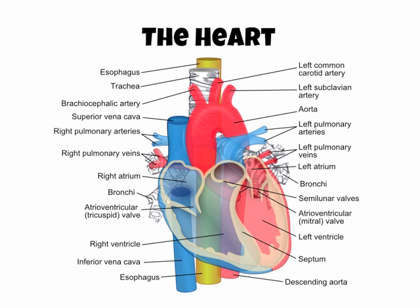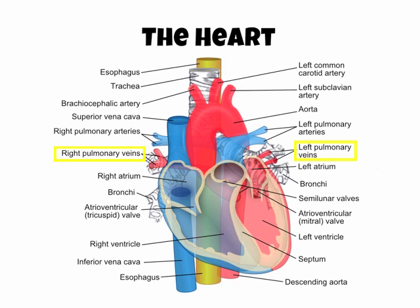Other important areas to note are the pulmonary arteries — the blue bit attached to the right ventricle and the pulmonary valve. That massive aorta at the top is really important to label. You can also see some tubes either side of the heart in red — those are the pulmonary veins, also important to label. On top of the right atrium you can see another tube called the superior vena cava, and the tube along the bottom is called the inferior vena cava.